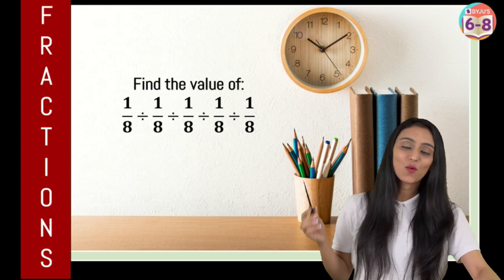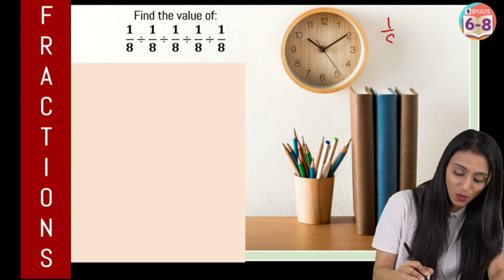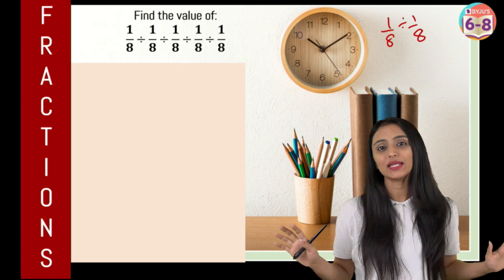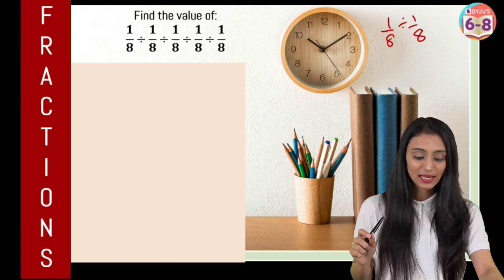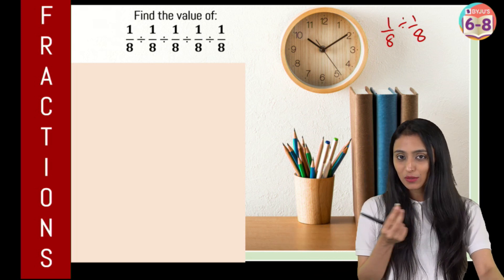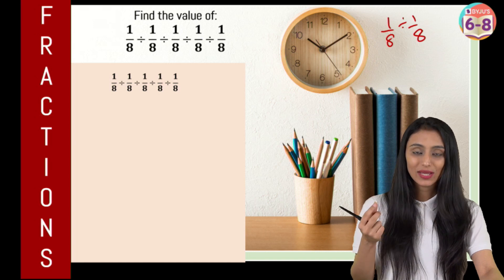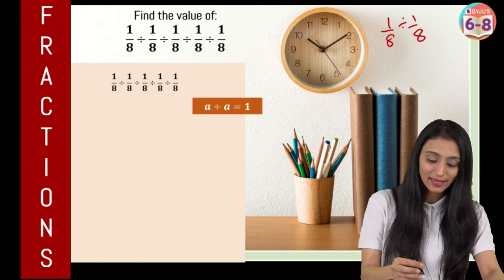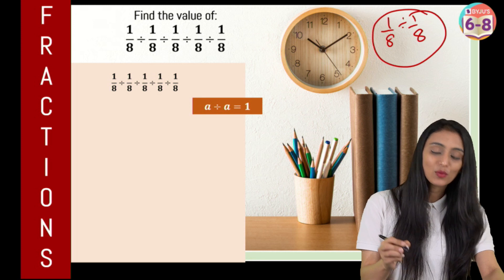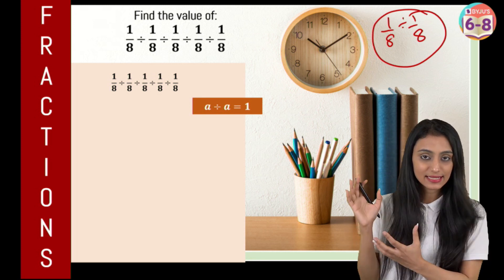If I only give you this much part — let's say I ask you to solve 1/8 divide by 1/8 — that is very simple, right? You would simply say that both numbers are the same, and when they are in division, the answer is going to be equals to 1. Using this logic, I'm going to solve this entire thing.